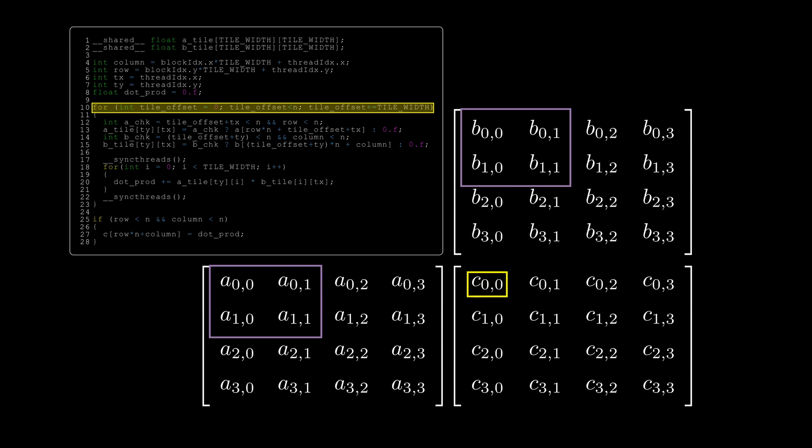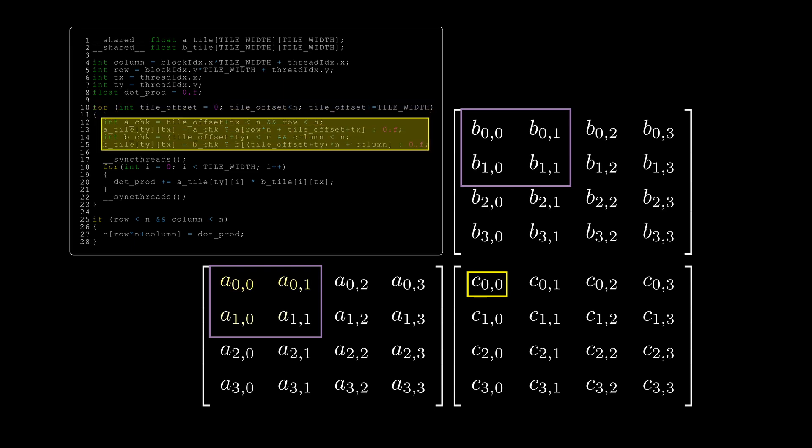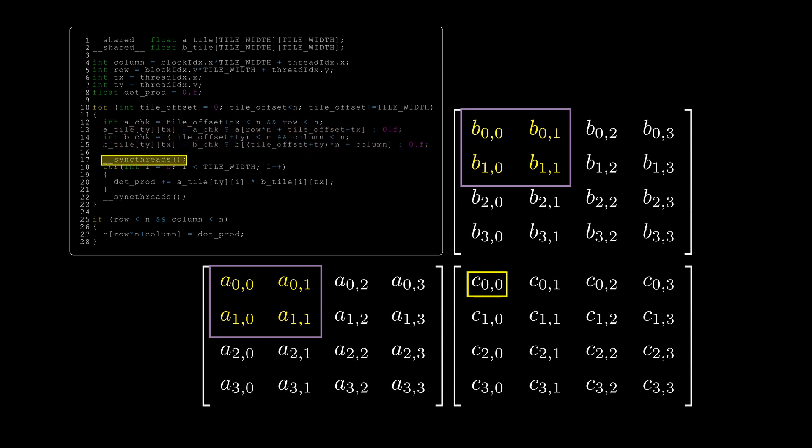Then, we divide our input matrices to tiles and we load the tiles from global to shared memory while performing a boundary check on them. Now, we have to synchronize our threads, since they are not guaranteed to execute all at the same time. The call to sync threads tells CUDA to wait until all threads in a block hit this synchronization point before we proceed with the next instruction.